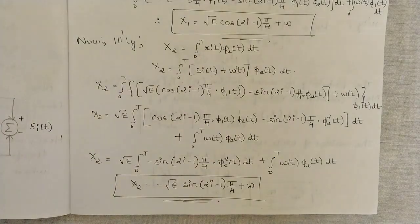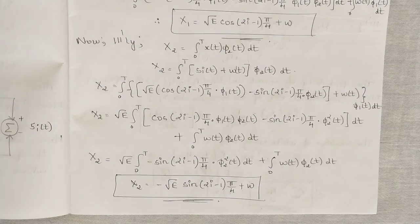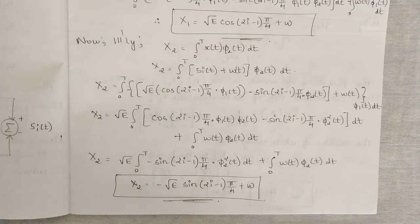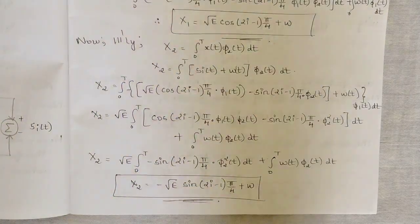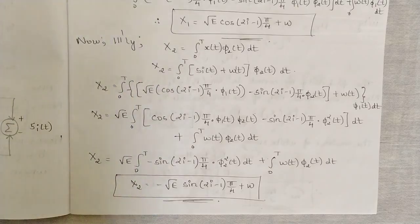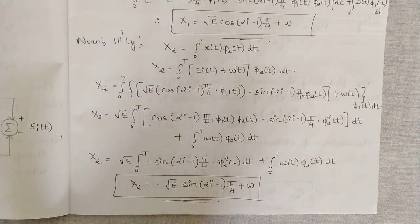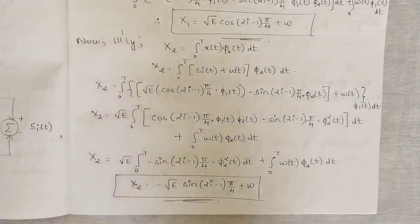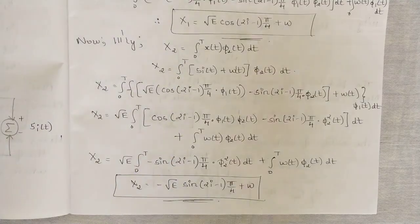That's all for this video. We discussed the concept of Quadrature Phase Shift Keying — the key differences between BPSK and QPSK, how signals are generated and transmitted, and the observation vectors. In the next video we will discuss the probability of error for QPSK signals. Please note everything down — it's very important for exams. Thank you, and stay tuned.